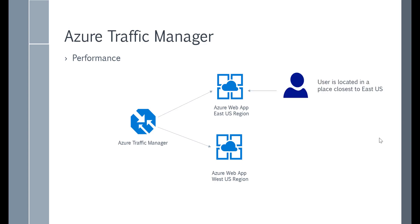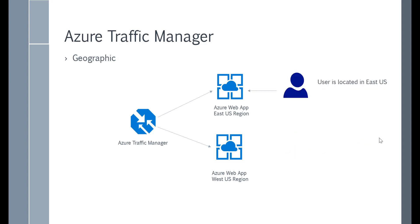In the Performance routing method, if a user is located in a place closest to the East US region, then they would be directed to the web app in East US, and similarly for West US. This is how the Azure Traffic Manager works.